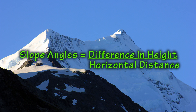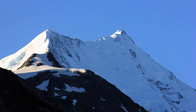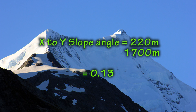Third, I will apply the following formula: slope angle equals the difference in height divided by the horizontal distance. 220 meters divided by 1700 meters equals 0.13.